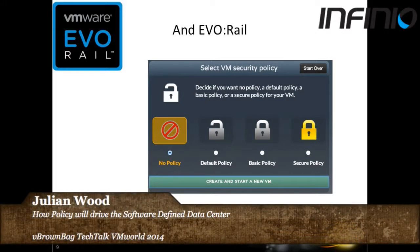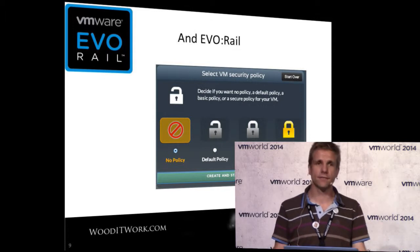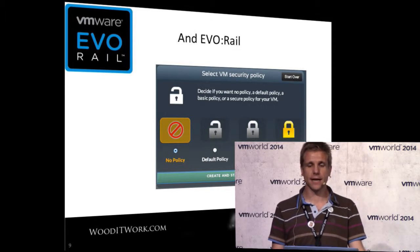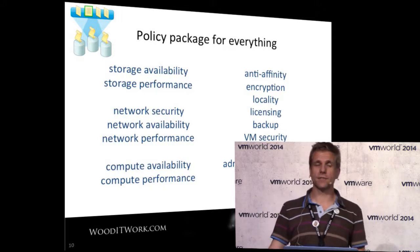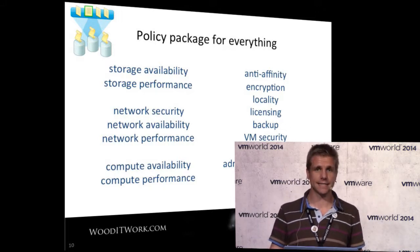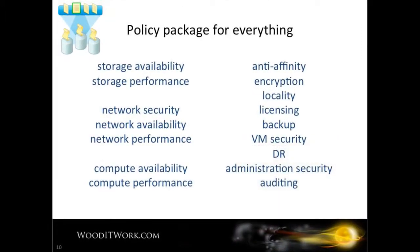Announced this morning, EVO:RAIL has certain big policy features. One of them is security policies - when you deploy a VM, it has a few different security policies which go and edit the VMX file to apply security settings, and that's done via policy. But what we really want is a policy package for everything, and this is where the true benefit of the software-defined data center is going to be. You've got storage, networking, and compute - all important things - but you don't want to manually decide which datastore, which network, and which compute cluster to use.